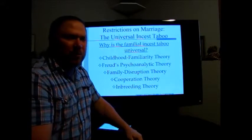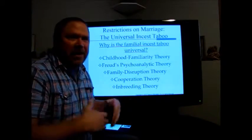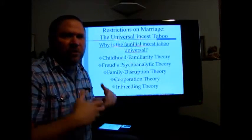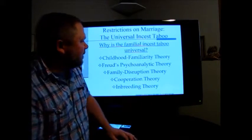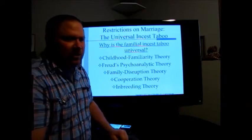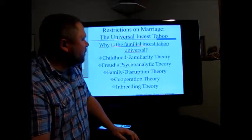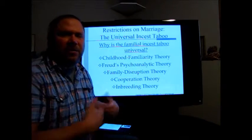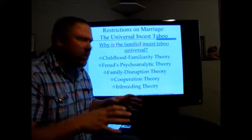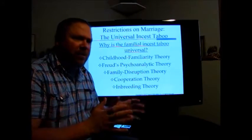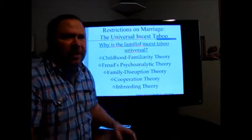There's also Freud's psychoanalytic theory. You've probably heard of the Oedipus complex — where the male has a sexual attraction for the mother and feels competition from the father and represses that — and the Electra complex is the opposite. The book points out weaknesses to these, noting this theory doesn't explain sibling incest. The family disruption theory, associated with Malinowski, who focused on functional aspects of culture, suggests that if males in the family were pursuing females among siblings it would disrupt the family, and so that's another theory for why the incest taboo exists.